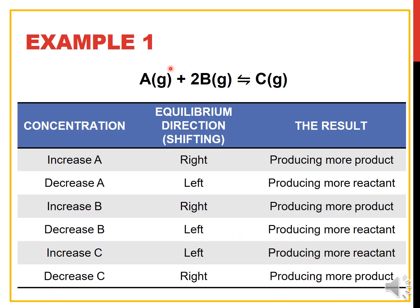Referring to this example, we have a reaction: A(g) + 2B(g) → C(g). If we increase the concentration of species A, the system will produce less of A. Since A is in the reactant position, the equilibrium will shift to the right toward the product, producing more product. But if we decrease the concentration of A, we will produce more of A, meaning it will shift to the left. This is similar for species B, as it is also in the reactant position.